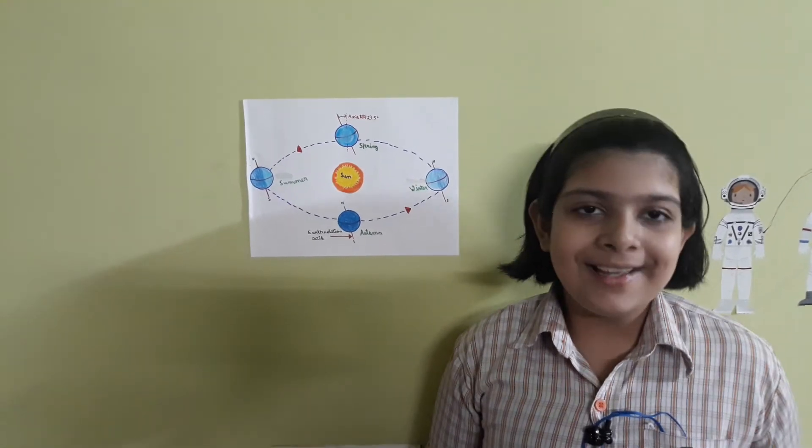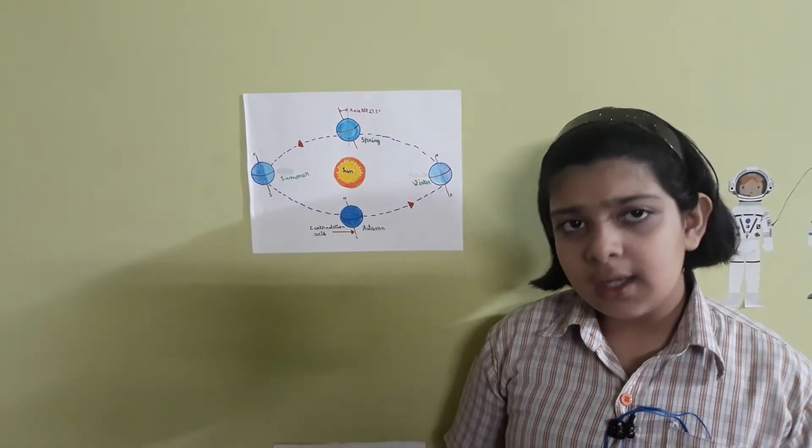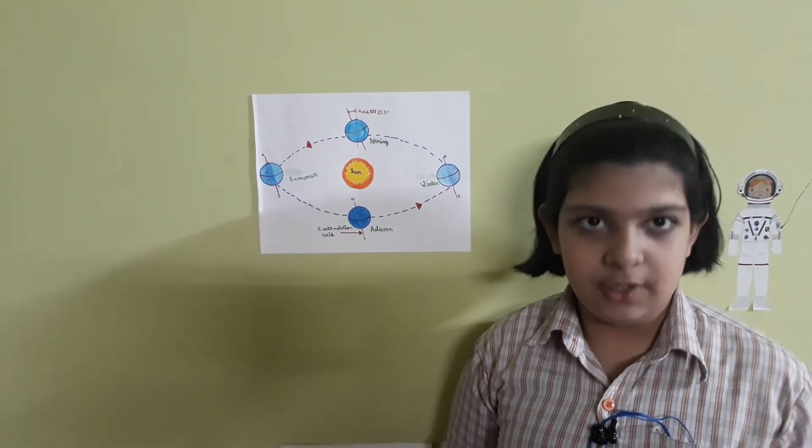Like all the other planets of the solar system, the earth revolves around the sun. It takes 365 and a quarter days to complete one revolution.